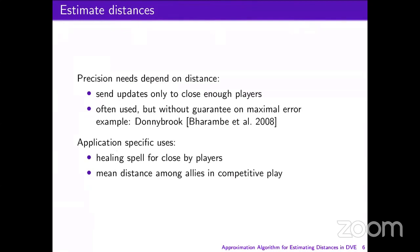The algorithms we propose are to estimate distances between players. This is important because in virtual worlds, the precision needs depend usually on the distance. Typically, when two players are far away from each other, they will not need as high a precision when estimating each other's states. This is already the case in proposed solutions, for example in Donnybrook, but the distance used there has no guarantee on the error.